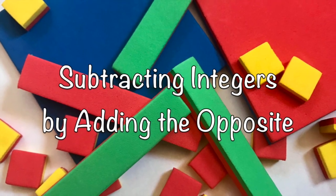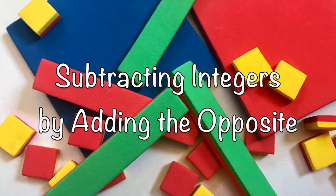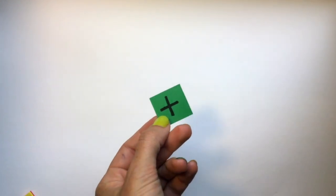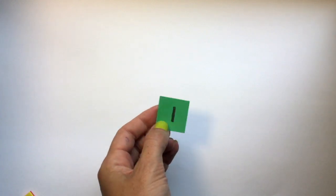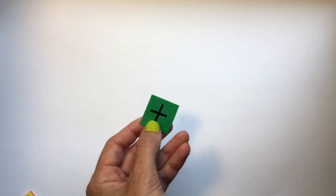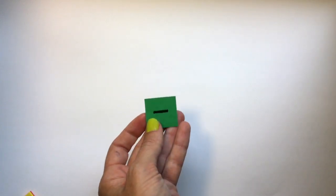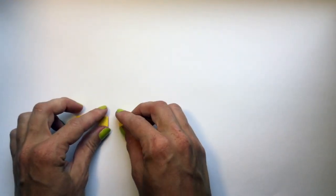Another method of subtracting integers using algebra tiles is to add the opposite. For this example, I suggest that you make a small tile that you can use which has an addition sign on one side and a subtraction sign on the other side. So our original problem was 3 minus 4.